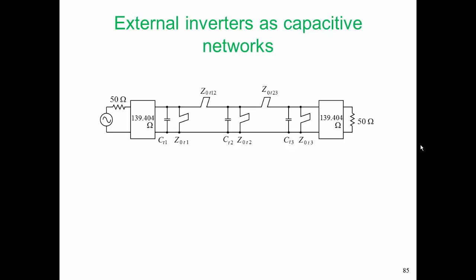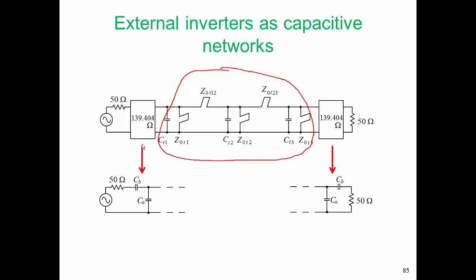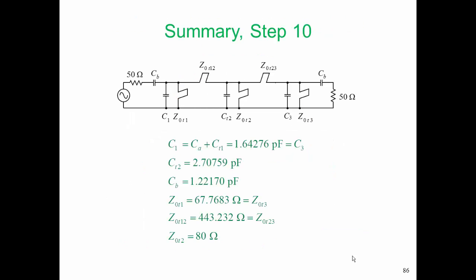So here is the prototype from the last step. We're going to keep everything in the middle the same, but we're going to implement the inverters using this capacitive network. And we're going to see that CA and C1 are in parallel. In fact, C1 is a bigger capacitor than CA. So even though CA is negative, putting CA and C1 in parallel is going to give us a positive capacitance. And when we do that, this is the prototype we end up with at the end of this step. We have a capacitor C1, which is now a combination of CA, which came from our inverter realization, and CT1.